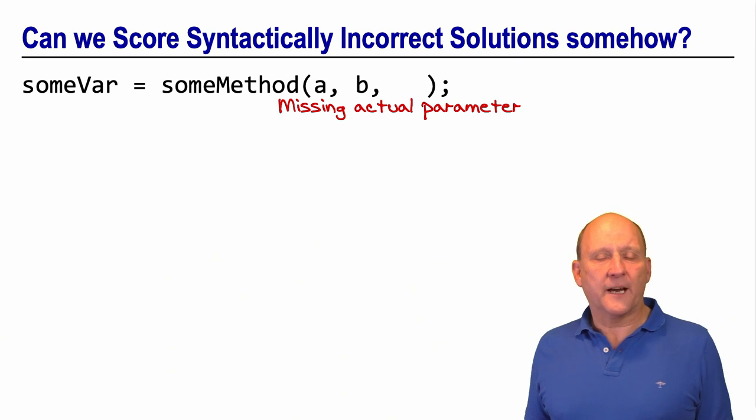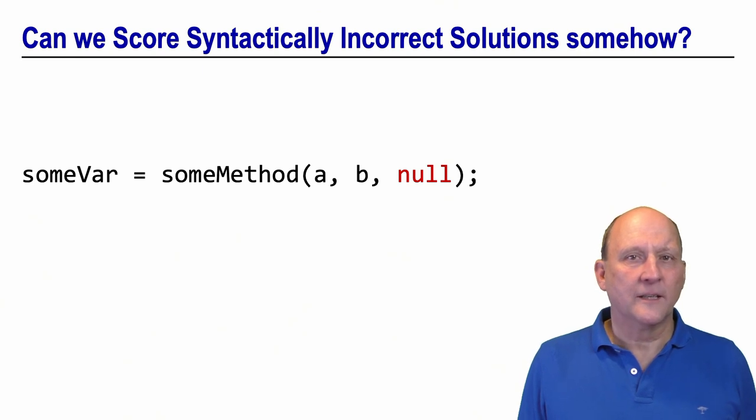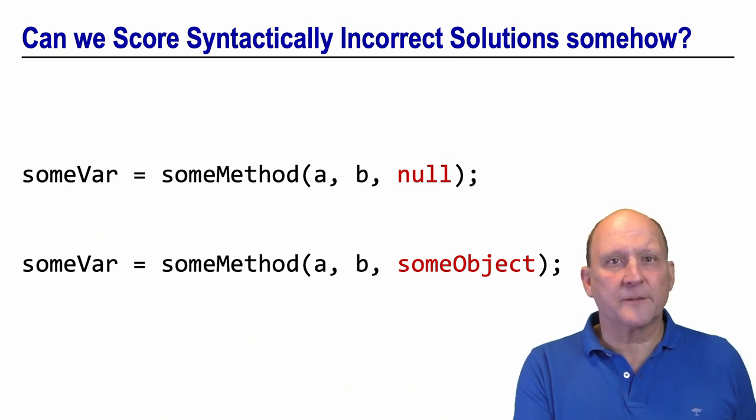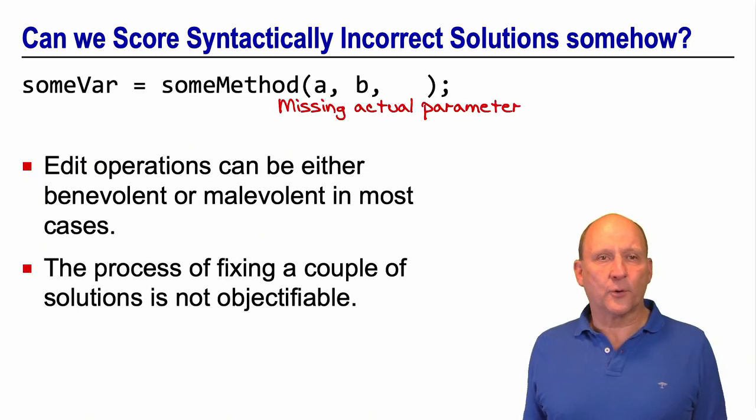And if you fix it, there are several ways to do that. For example, edit operations you apply to this mistake can be either benevolent or malevolent in most cases, and this makes the process of fixing syntactical errors completely unobjective. For example, in the case of this missing actual parameter, you could insert easily null, you could insert an object if there is one around, or you could instantiate the correct class and insert a new object. And these solutions might be benevolent or malevolent and might require more or less cognitive effort. Therefore, we scored all syntactically incorrect solutions with a score of zero.